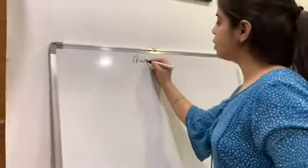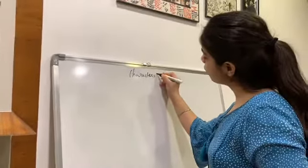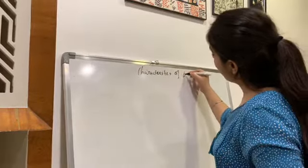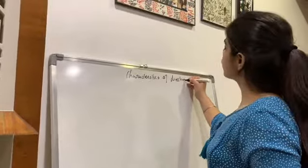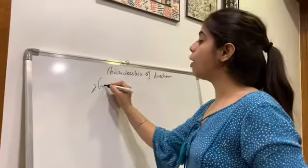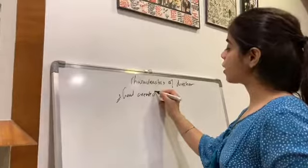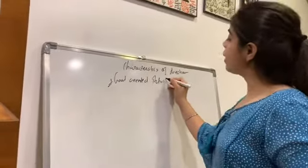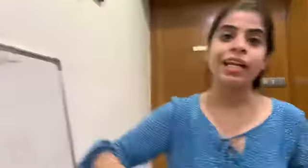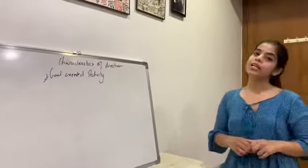The first characteristic of direction is that it is a goal-oriented activity. When directing happens, employees get guidance. If they get guidance, they will do good work and will be motivated. Ultimately, business objectives are achieved. So directing is a goal-oriented activity. That is the first characteristic.